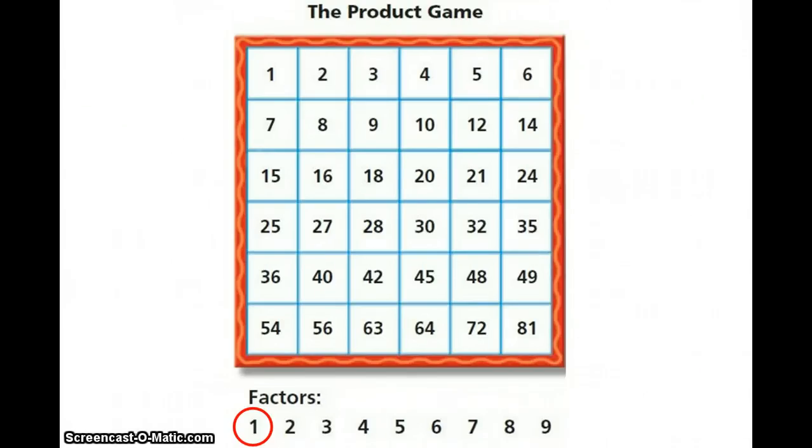And how the product game works, along the bottom of the game board, are factors. And you and another person play this game together. Player 1 would go first by putting a paper clip on any one of these factors below.